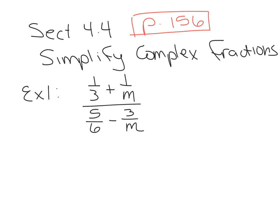We're working in intermediate algebra, section 4.4, starting on page 156. The topic is simplifying complex fractions. Example one shows a complex fraction because there are fractions inside of a big fraction. The numerator has addition of fractions and the denominator has a subtraction of fractions — that's what we call a complex fraction.